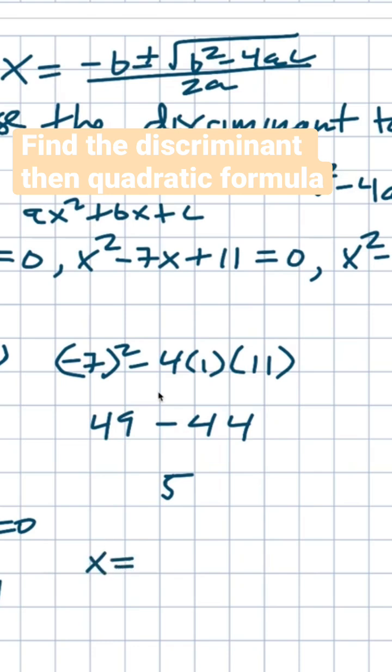Therefore, x is equal to the opposite of b. So b is negative 7, so therefore it's going to be positive 7 plus or minus the square root of my discriminant, which in this case is 5, all over 2 times a, which in this case is going to be 1. So 2 times 1 is just 2. Therefore, that is going to be my two solutions.